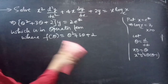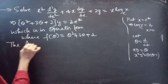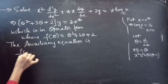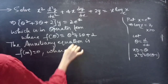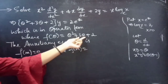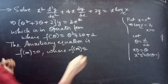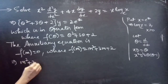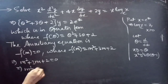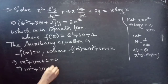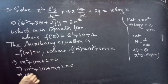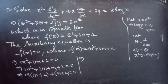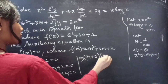The auxiliary equation is F(m) = 0, where F(m) = m² + 3m + 2. So our auxiliary equation is m² + 3m + 2 = 0. Splitting +3m as 2m + m: m(m + 2) + 1(m + 2) = 0, giving (m + 2)(m + 1) = 0.